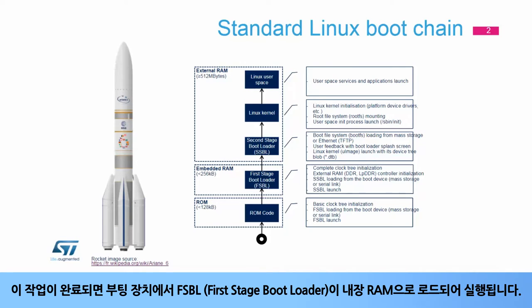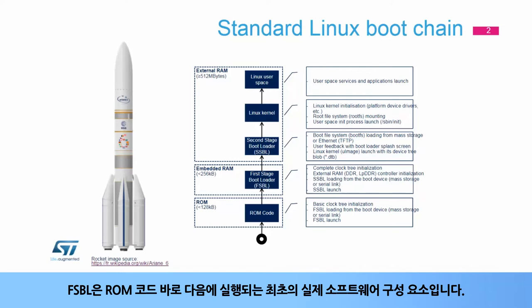Once this is done, the first stage bootloader, or FSBL, is loaded from the boot device to the embedded RAM, then executed. The FSBL is the first real software component executed, just after the ROM code.